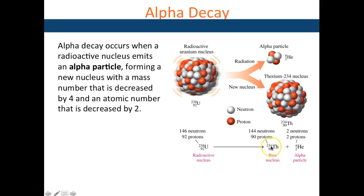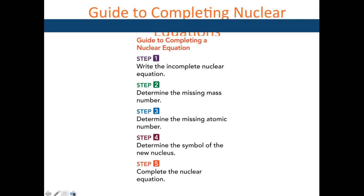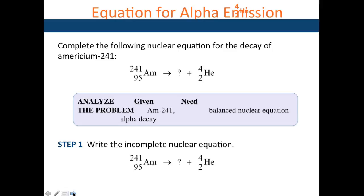How do you write a complete nuclear equation? First, write down the incomplete nuclear equation. Determine what the missing atomic number is - that's how you identify the new element. Then determine what the missing mass is, and that completes the equation.